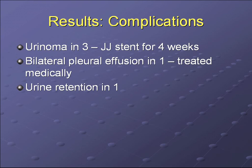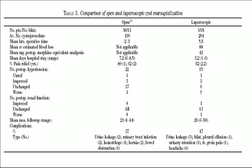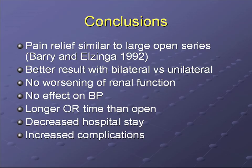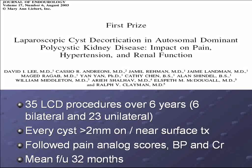A notable complication in laparoscopic series is urinoma. In this series, three patients developed urinoma, which responded to double-J stent placement for four weeks. The team attempted to detect urinary leaks intraoperatively using a ureteral occlusion balloon catheter and indigo carmine injection, but this was insufficient to prevent post-operative urinomas. Compared to the open series, pain control results were comparable, but the laparoscopic series had longer operative time and a higher percentage of complications.